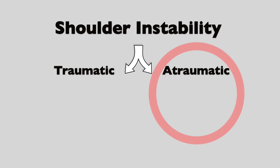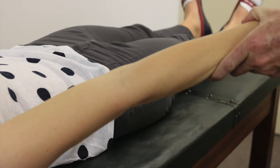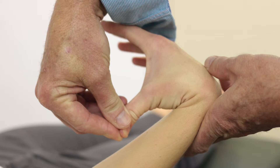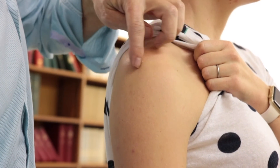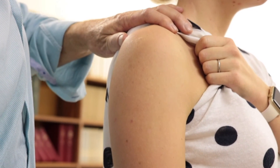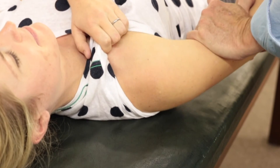Now let's move on to atraumatic shoulder instability, which is the A in AMBRI. Atraumatic shoulder instability usually occurs in people with generalized ligamentous laxity, which can be identified with hyperextension of the elbows and knees and exaggerated apposition of the thumbs. In the shoulder, we can look for the sulcus sign, 90-degree external rotation, a positive apprehension test, and perform posterior load and shift manoeuvres.